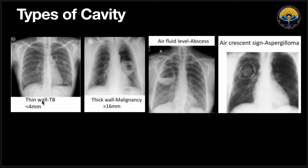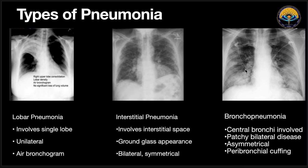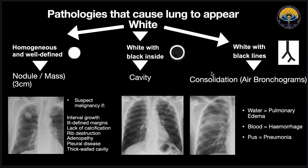Coming to cavities: if the cavity wall is less than 4 mm, it is a thin-walled cavity, usually a bulla. If it's thick-walled, it could likely be a malignancy. There could also be an air-fluid level, suggesting an abscess, or an air crescent sign, which would suggest aspergilloma. So we have talked about nodule, mass, and cavity; now coming to consolidation, we will discuss pneumonia.